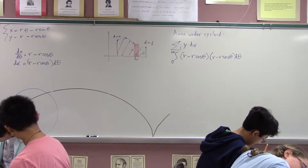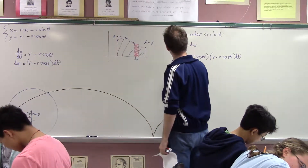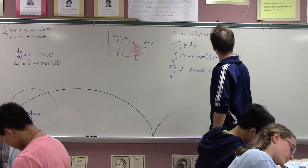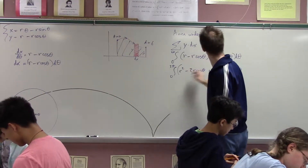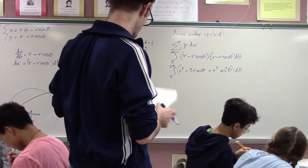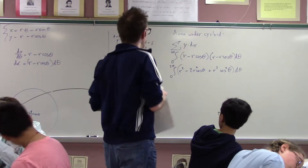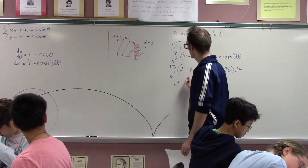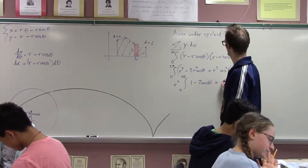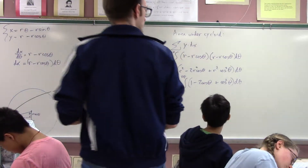So we have the integral of y·dx which is (r minus r·cos(theta)) times (r minus r·cos(theta))·dθ. Expanding that out: r² times the integral of one minus two·cos(theta) plus cos²(theta)·dθ from zero to two pi. Now we have this integral — I wouldn't call it easy but it's doable. We have to do that thing for cos²(theta).